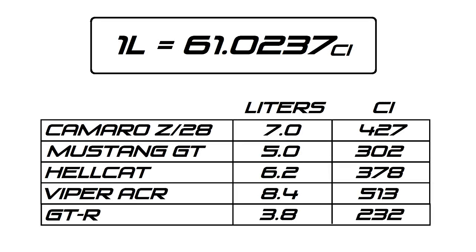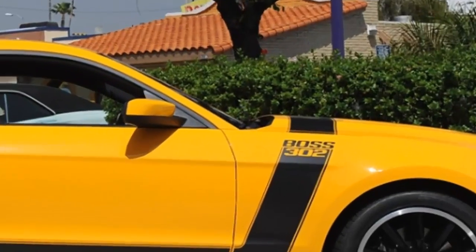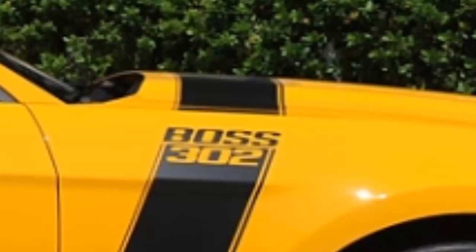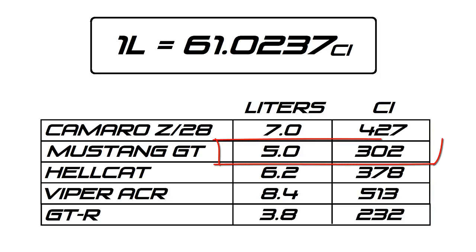Just a quick note: liters and cubic centimeters are metric measurements of volume. Although most newer American cars use liters as well, older American cars did use cubic inches and from time to time you still see it. For example, the Mustang GT has a 5 liter engine, or 5.0, but when they came out with the special edition it was called the Boss 302 — a throwback to the old Boss 302. In fact the 5 liter engine is 302 cubic inches.